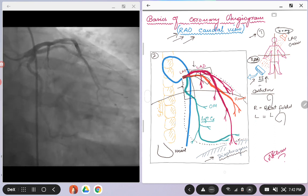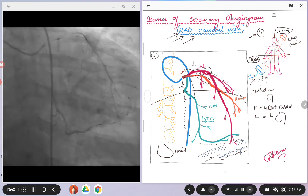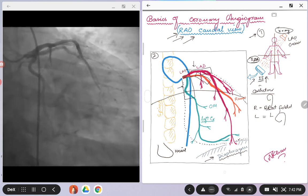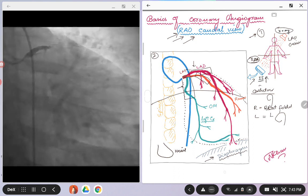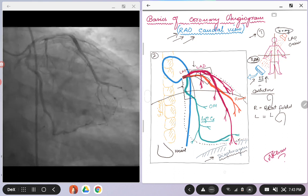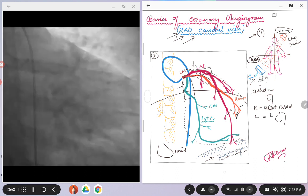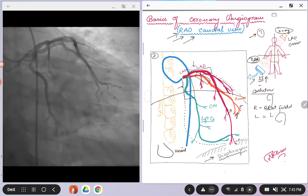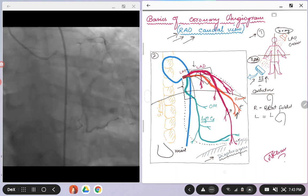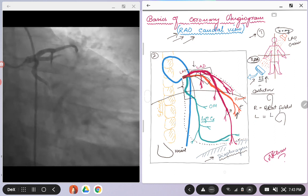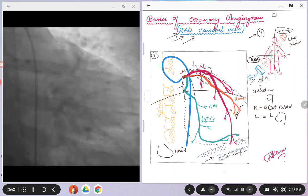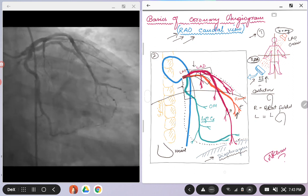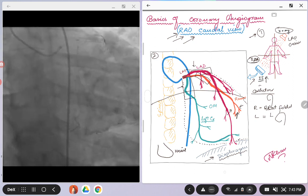As we all know, the caudal views are good for the body of the arteries or coronary arteries but not as good for the distal vessels where they can be overlapped or foreshortened. But this view in itself is a very good view after the spider view once you have ruled out any significant disease in the left main or the ostium of the LAD or the left circumflex.